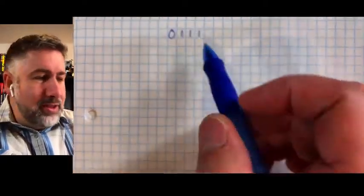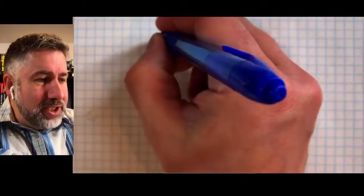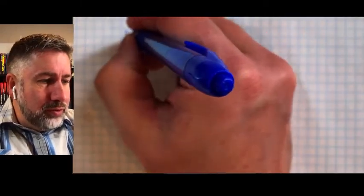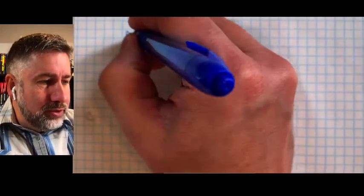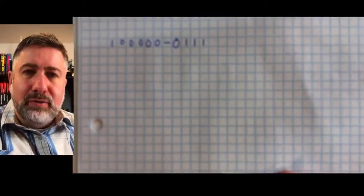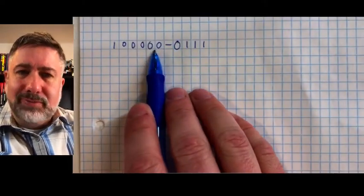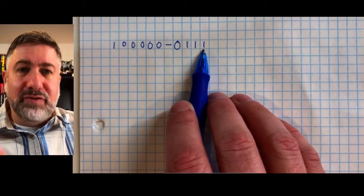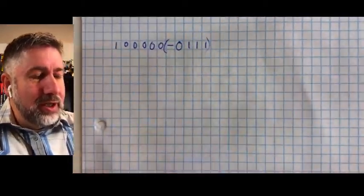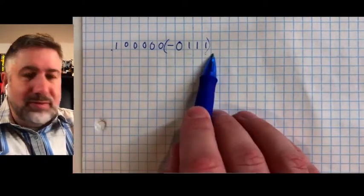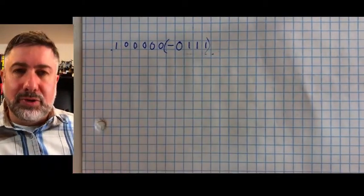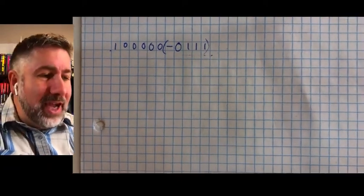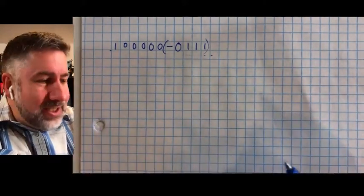So we're going to take a number — say, positive seven — and make it negative by subtracting it from a really big number. Let's subtract it from 32. This is going to give us a new number that will be the representation for the value of negative seven. Now, I understand the irony of having to subtract in order to get rid of subtraction, but let's see what number we get.